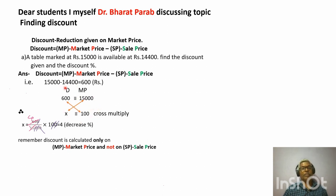Now we need to calculate the discount in percentage. We write the equation as we have learned in earlier videos. Discount is on one side and market price is on the other side, so 600 rupees is to 15,000 rupees. If discount percentage is x, then x is to 100. After writing this equation, cross multiply: x = 600 × 100 divided by 15,000. Cancelling zeros, the discount percentage is 4 percent.